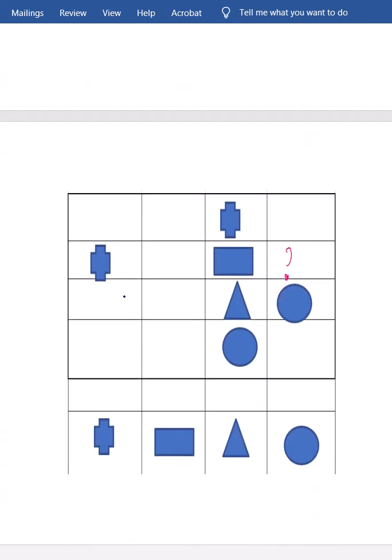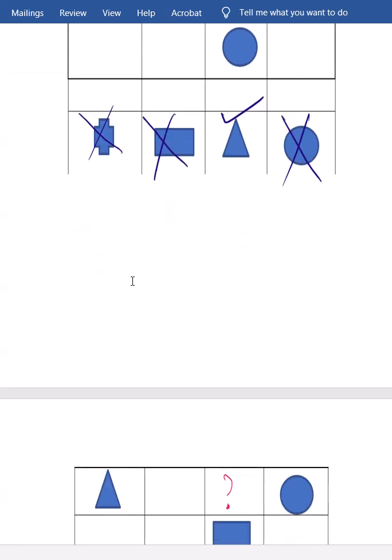Now, what about this one? In this row, already plus symbol is available. Rectangle is already available. Circle in this column already available. So circle cannot come. So answer must be triangle. Here is like elimination method we are using. As per row-wise, plus cannot come. Rectangle cannot come. As per column-wise, circle cannot come, right? So answer must be triangle. Excellent.